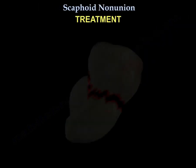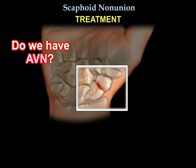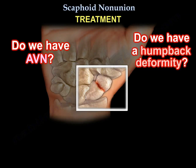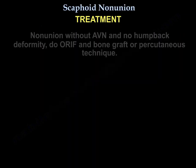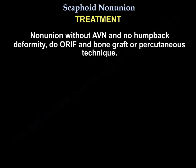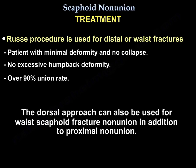Treatment of non-union of the scaphoid depends on three questions: Is there AVN? Is there humpback deformity? Or is there arthritis? For non-union without AVN and without humpback deformity, you will do ORIF and bone graft — this is the Russe procedure. The patient will have minimal deformity, no collapse, no excessive humpback deformity, and the union rate is over 90%.